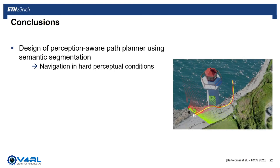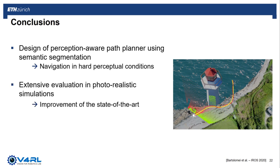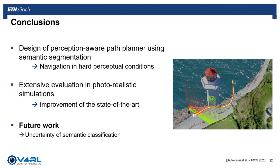To summarize, in this work we propose a perception-aware planning pipeline that pushes the boundaries of the state-of-the-art by incorporating semantics into planning. With this formulation, we can navigate under adverse perceptual conditions. In the evaluation in photorealistic simulations, we show we can reach the assigned goals with limited drift, with noticeable improvements in performance compared to the state-of-the-art in active perception. Future research directions include investigating how to incorporate the uncertainty of labels from semantic segmentation and how to extend the current pipeline with reinforcement learning, where the objective is to let the robot autonomously learn which semantic classes are more suitable for camera-based state estimation.